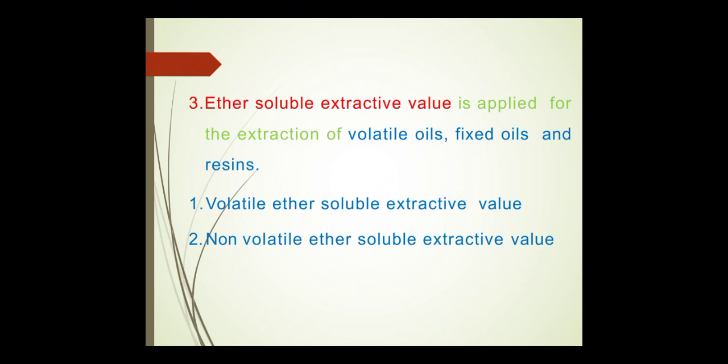Ether-soluble extractive values are applied for extraction of volatile oils, fixed oils, and resins. There are two types: volatile ether-soluble extractive, which represents the volatile oil content of the drug, and non-volatile ether-soluble extractive, which represents resins, fixed oils, or colouring matter present in the drug. Example of non-volatile ether-soluble extractive: capsicum, not less than 12%; nutmeg, not less than 25%.